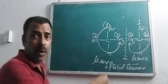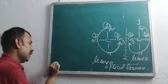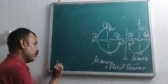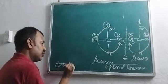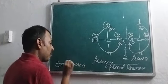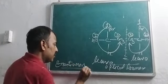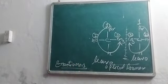Any optical isomer is also called an enantiomer. So optical isomers and enantiomers are the same thing.